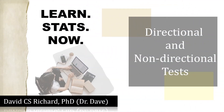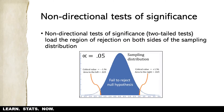In this video we're going to talk about the difference between directional and non-directional tests of statistical significance. Up to this point in the video series we've been only discussing non-directional tests of significance, and those are tests that are typically called two-tailed tests. The reason they're called two-tailed tests is because the critical region, the region of rejection, is loaded onto both sides of the sampling distribution.